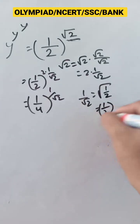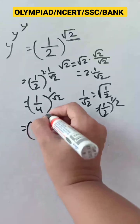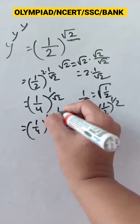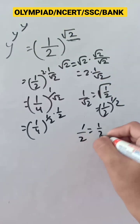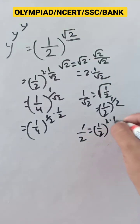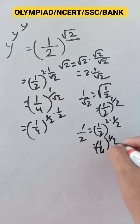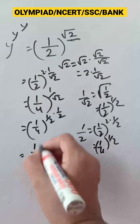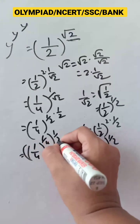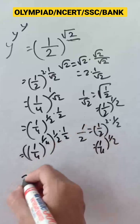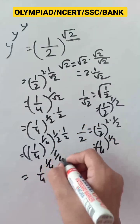That means we can write it as 1 by 2 to the power 1 by 2. So, 1 by 4 to the power 1 by 2 into 1 by 2. Now, 1 by 2 we can write as 1 by 2 to the power 2 into 1 by 2, that means 1 by 4 to the power 1 by 2. So we can write it as 1 by 4 to the power 1 by 4 to the power 1 by 2 into 1 by 2, giving us 1 by 4 to the power 1 by 4.